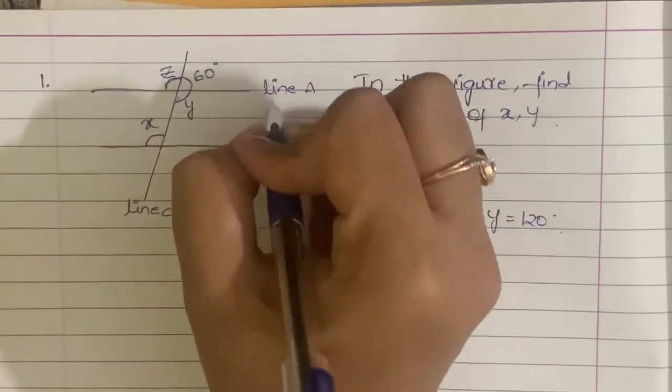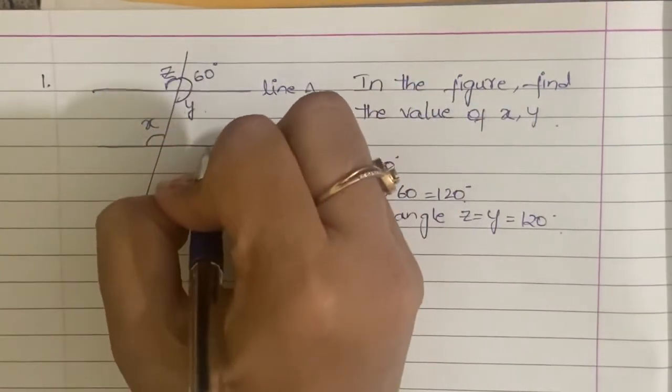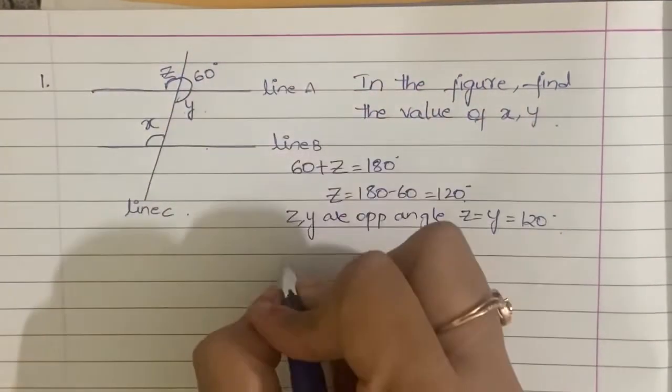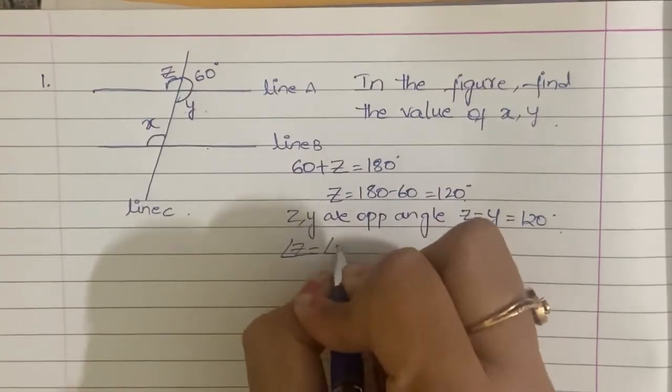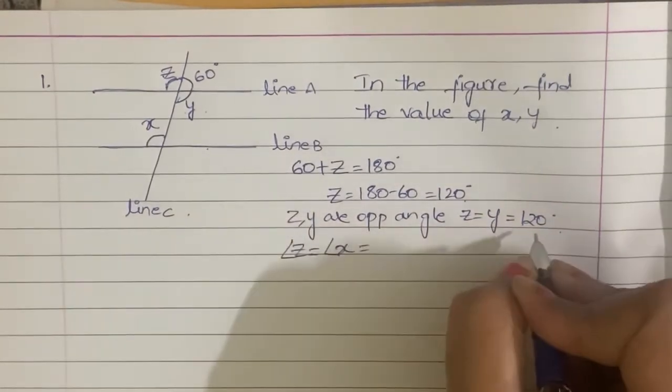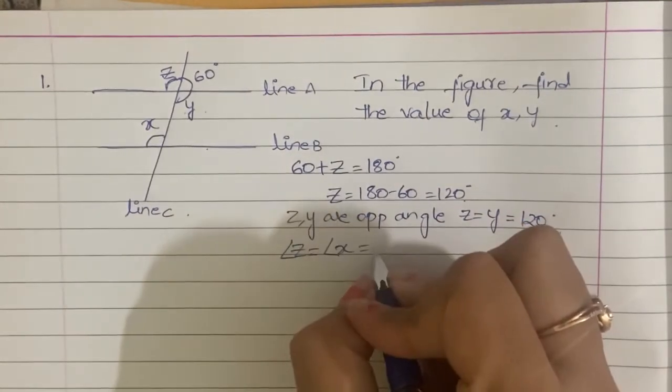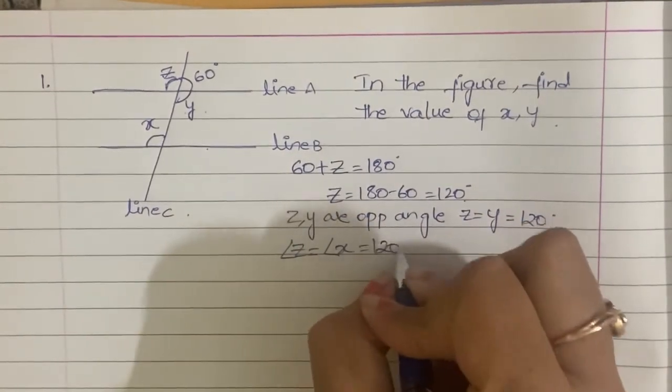Since Line A and Line B are parallel lines, Angle Z is equal to X, and that is equal to 120 degrees.